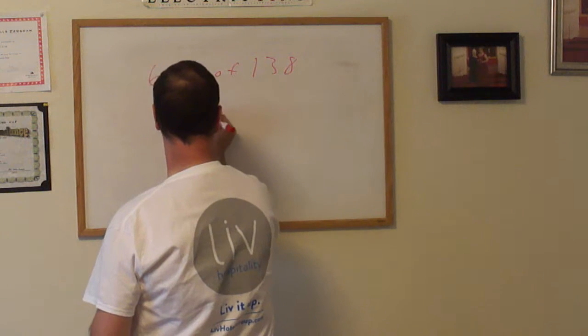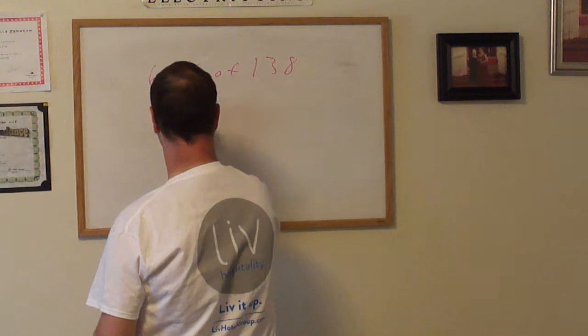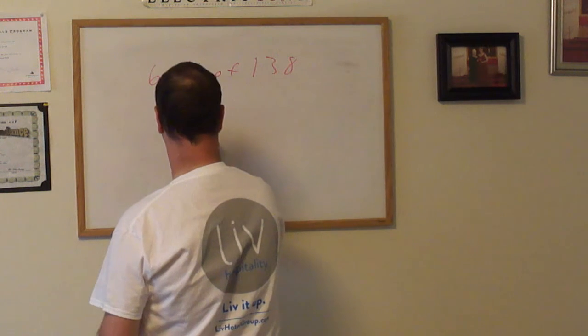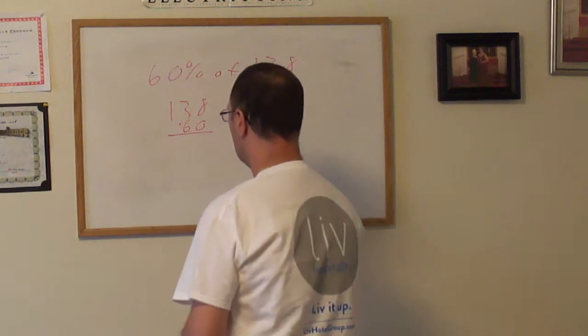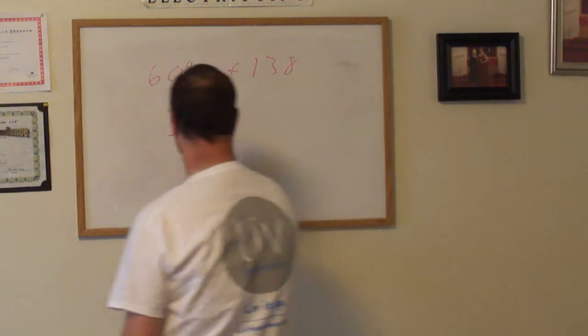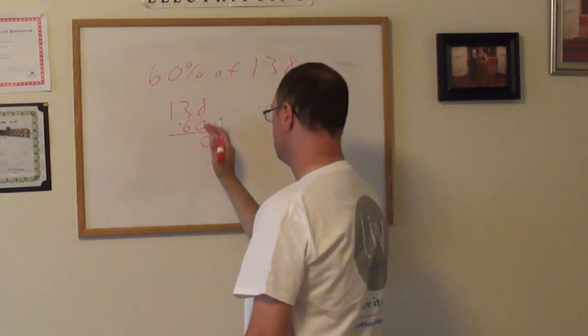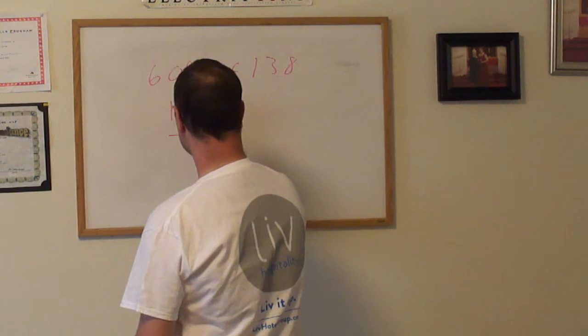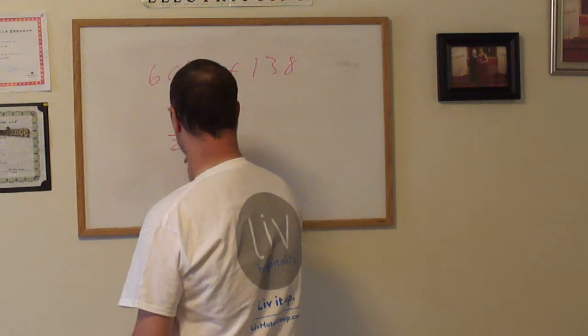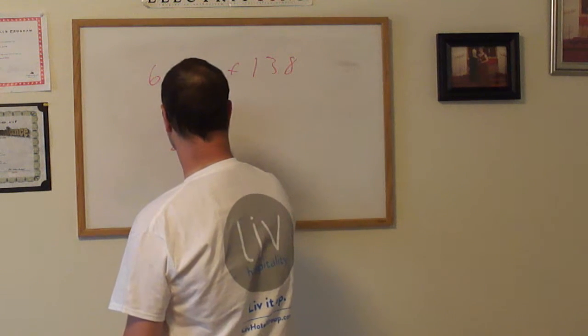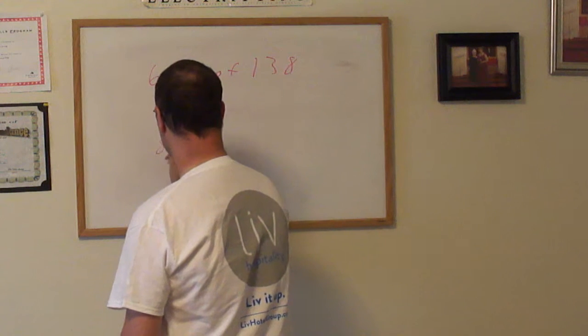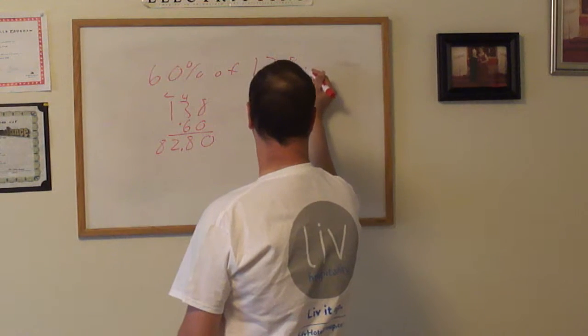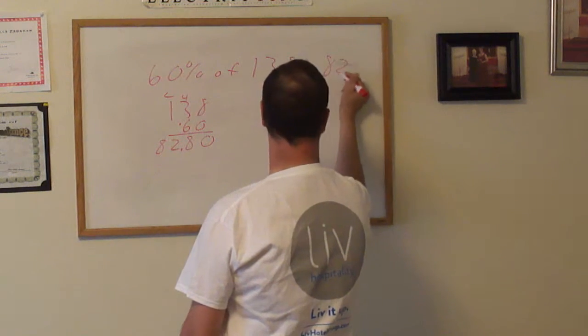So 38 and 0.60. I need to add a zero and we'll do the shortcut to multiply. 18, 22... 6, 8... will equal 22.8.